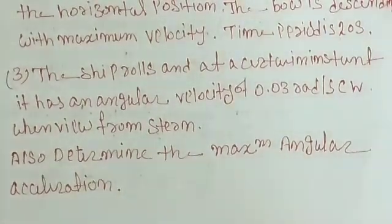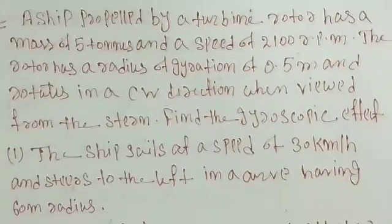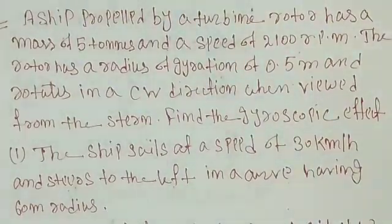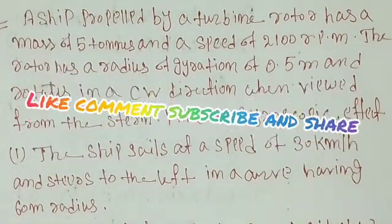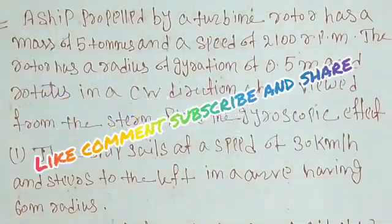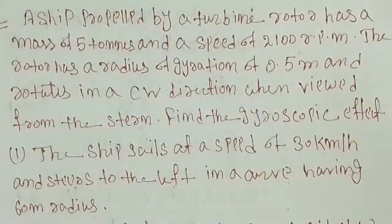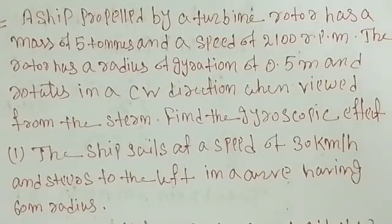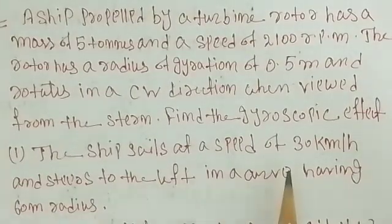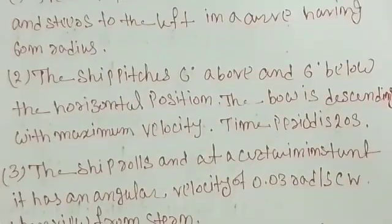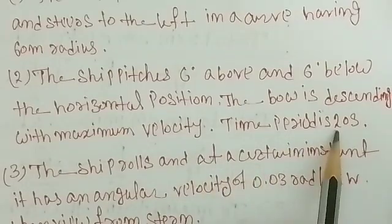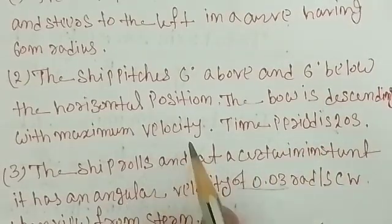This problem is related to a naval ship with all three cases: the ship is steering, pitching, and rolling. The ship has a mass of 5 ton, the rotor speed is 2100 RPM, and the radius of gyration is 0.5 meter, rotating in a clockwise direction. When sailing, the speed is 30 km per hour and the radius of curvature is 60 meter. For pitching, it is 6 degrees above and below with a time period of 20 seconds. For rolling, the angular velocity is 0.03 radian per second.